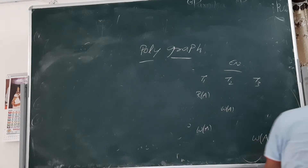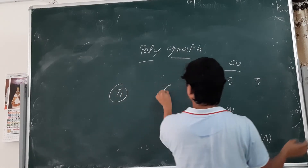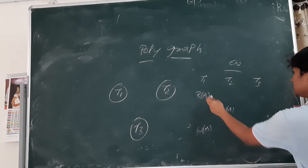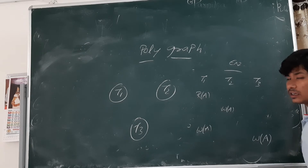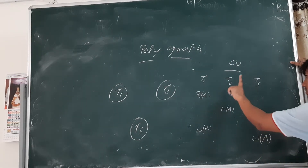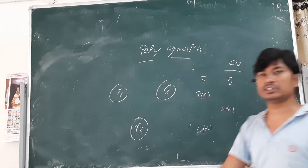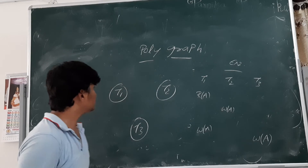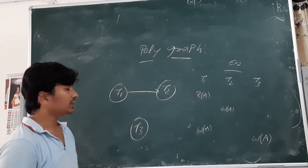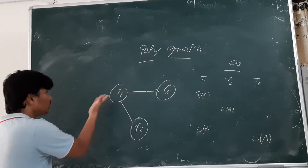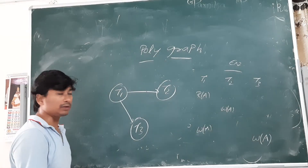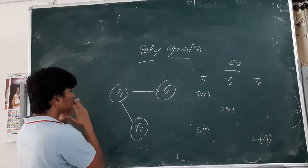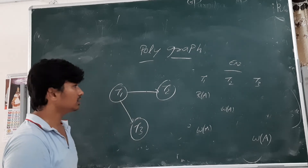Let me discuss another example. We have three transactions, so the polygraph will have three nodes: node 1, node 2, and node 3. Looking at all the reads, T1 has done the initial read. This means T2 and T3 should come after T1. We don't know the order between T2 and T3, but both must come after T1. So I draw edges from T1 to T2 and from T1 to T3.